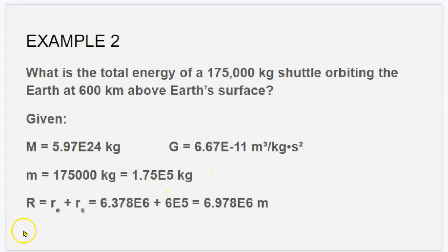And the radius that we're talking about is the radius of the earth plus the distance between the earth and the satellite, so the radius of the satellite from the earth. So we're going to add those two together, the radius of the earth plus the radius of the satellite, which is 6 times 10 to the 5th. When you add those two together you get 6.978 times 10 to the 6 meters.